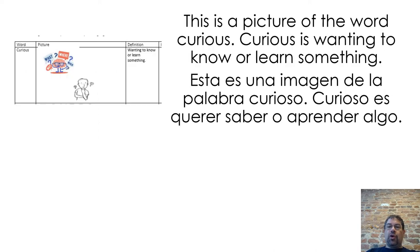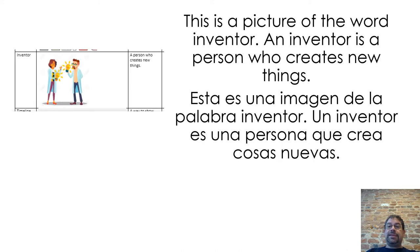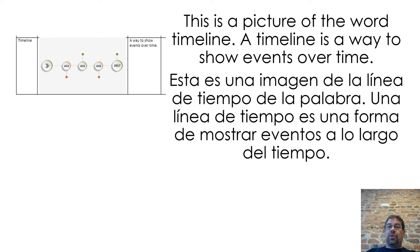This is a picture of the word curious. Curious is wanting to know or learn something. This is a picture of the word invention. An invention is a new thing created to help. This is a picture of the word inventor. An inventor is a person who creates new things. This is a picture of the word timeline. A timeline is a way to show events over time.